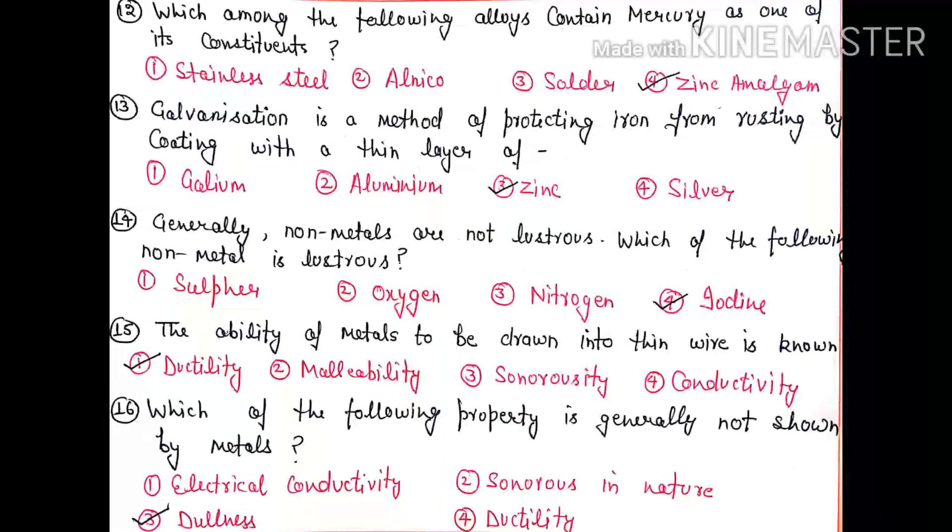Question 12: Which among the following alloy contains mercury as one of its constituents? Any metal with mercury as an alloy is called amalgam, for example zinc amalgam means zinc plus mercury. So option 4 is right. Question 13: Galvanization is a method of protecting iron from rusting by coating with a thin layer of zinc.